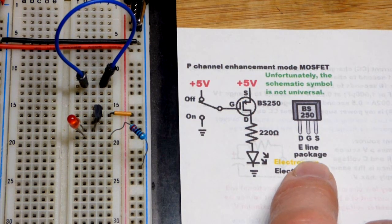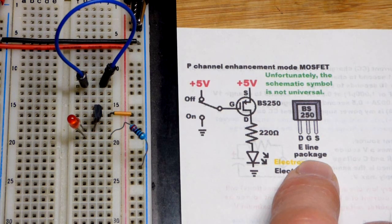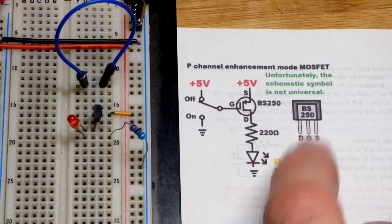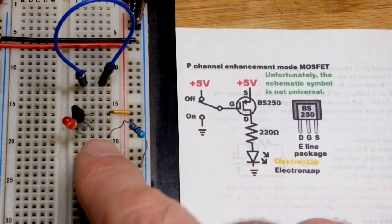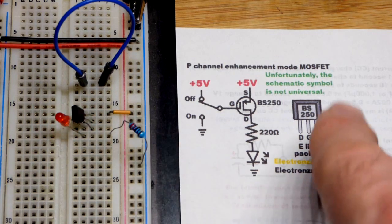The components that I have are in the E-line package right there. I had to order these from DigiKey, and they didn't come in the T092 package. They came in the E-line package, which looks like this. So the more narrow side is to the right there.